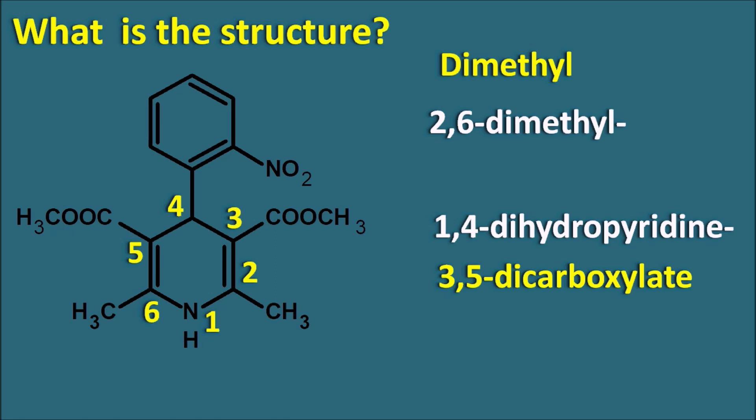At the fourth position there is a phenyl ring attached with a nitro group at the second position. This group is important for the activity of nifedipine — it is a 2-nitrophenyl group, also called orthonitrophenyl. This orthonitrophenyl group at the fourth position increases the activity of nifedipine. These are the structural features of this drug, which is a 1,4-dihydropyridine derivative.